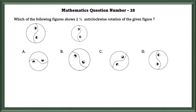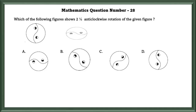Mathematics question number 28. Which of the following figures shows two 1 by 4 anticlockwise rotations of the given figure? If we make two full turns, the figure will look the same. So, the thing we have to concentrate on is 1 by 4. If it turns 1 by 4, then the answer would be A.